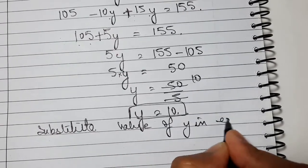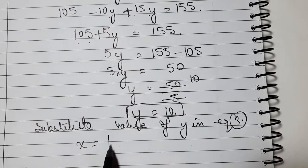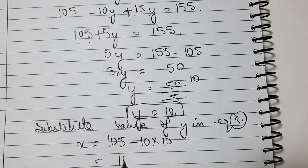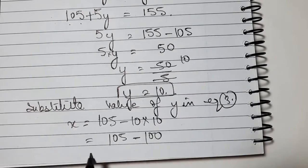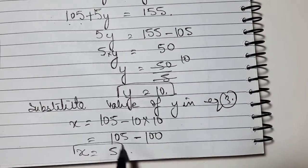From equation number 3, x equals 105 minus 10 times 10, which is 105 minus 100. So 105 minus 100 is 5, therefore x equals 5.